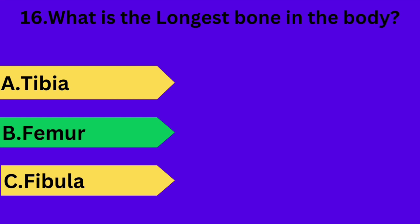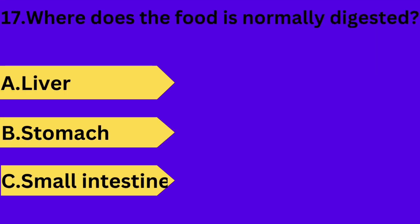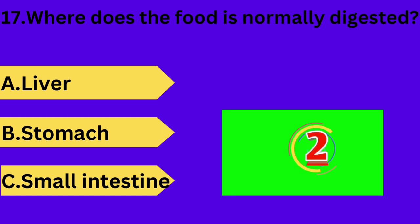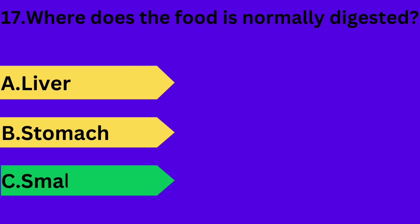And next question is: where is food normally digested? Option A: liver. Option B: stomach. Option C: small intestine. Your time starts now. Answer is option C: small intestine.